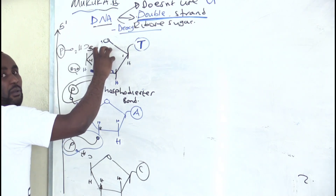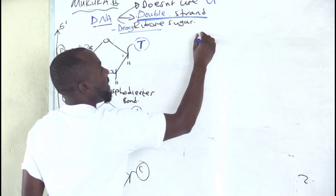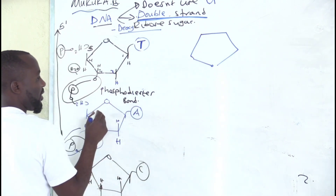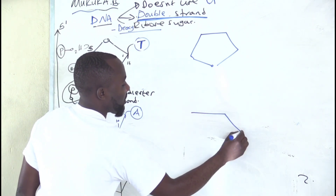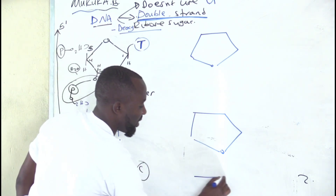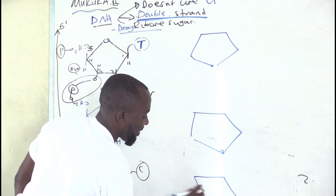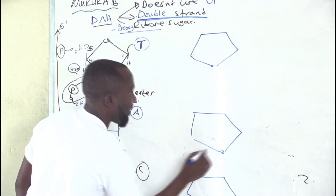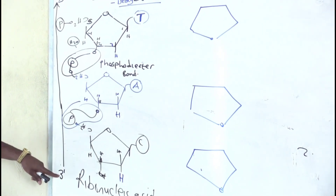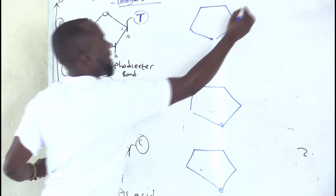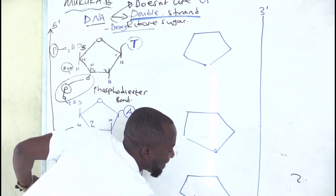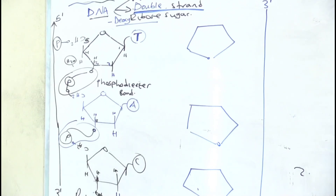A sugar complementary to this will be drawn here and it's going to face downward. Again, a sugar complementary to the next will be drawn facing downward, and the same for the last one. That is the first step. When you face them downward, instead of having 5-prime to 3-prime, it will be the opposite — what starts here is 3-prime and what ends there is 5-prime.